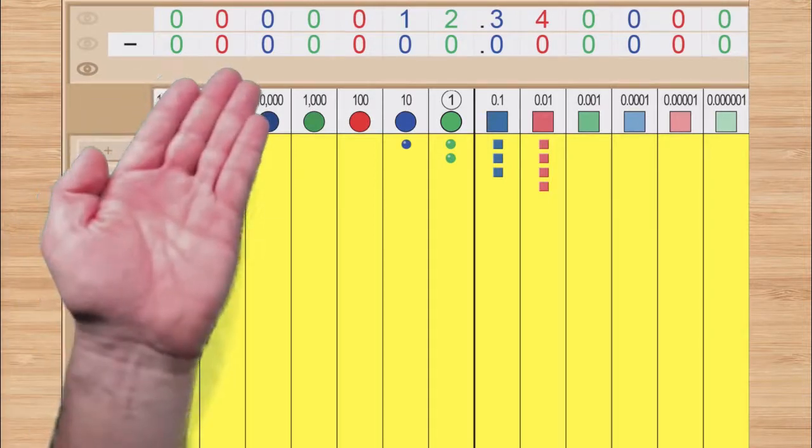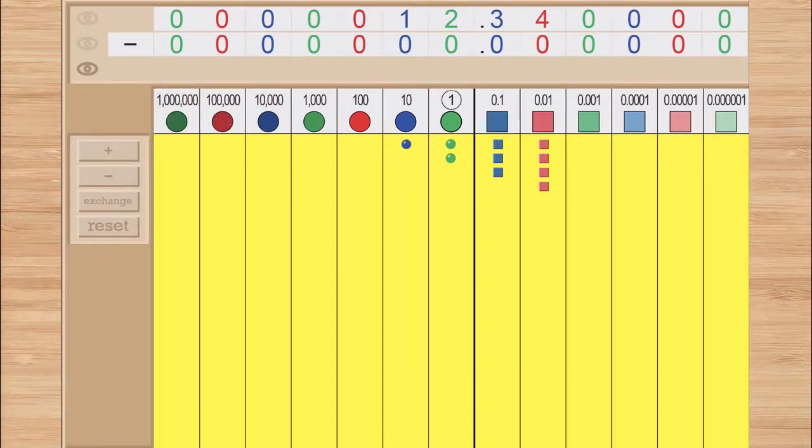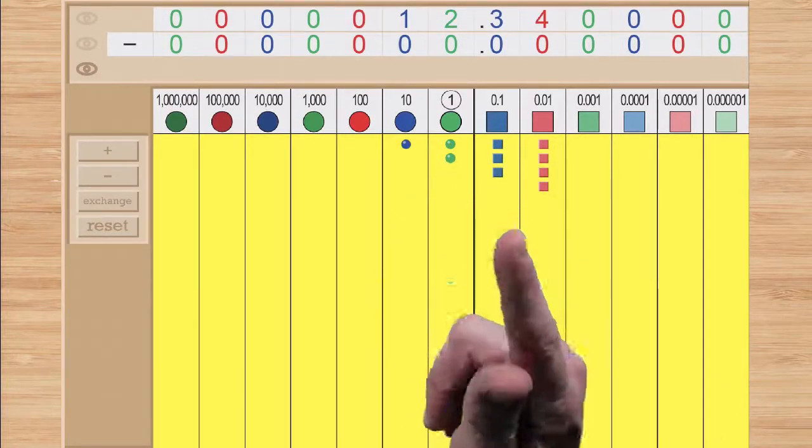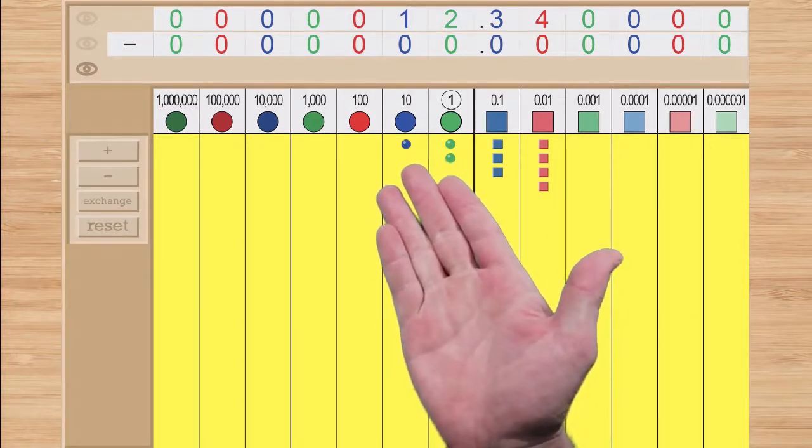The second row of cards has appeared again, giving you the chance to form your subtrahend. And the third row is available to symbolize your answer. Let's subtract 3 and 15 hundredths from 12 and 34 hundredths.